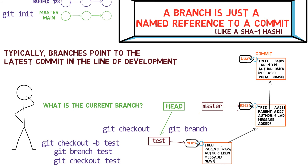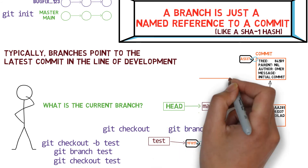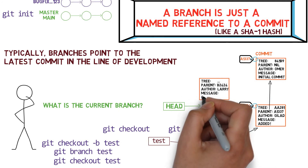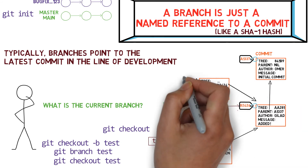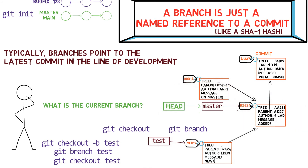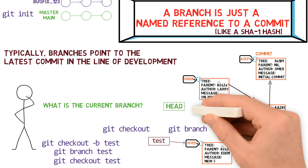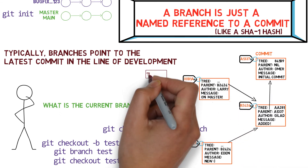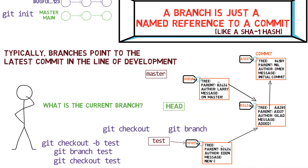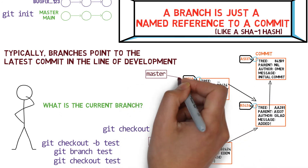So, if we go back to master now by using git checkout master, what we actually do is move HEAD to point to master again. Now, what happens if we create another commit? What branch will it be added to? It will be added to master branch, as this is the active branch.